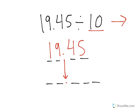So if we're moving one to the right, the 5 will move over here, the 4 will be here, the 9 will be here, and the 1 will be there.